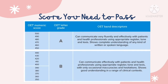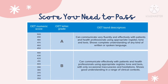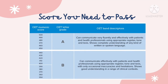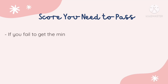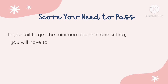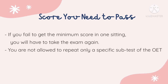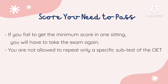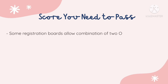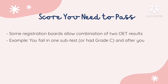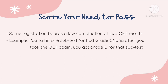IMGs are required to score a minimum of 350 or grade B on each of the four components of the OET exam. If you fail to get the minimum score in one test administration, you will have to take the exam again. You are not allowed to repeat only a specific part of the OET. However, some registration boards allow you to combine your OET results from two different sittings.